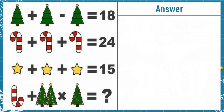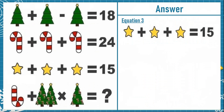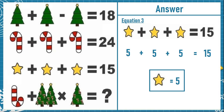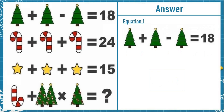Hope everyone has given their answers in the comment section. Now I will tell you the correct solution of this puzzle. Let's take equation number 3, which says star plus star plus star is equal to 15. So 5 plus 5 plus 5 is equal to 15, meaning a star is equal to 5.